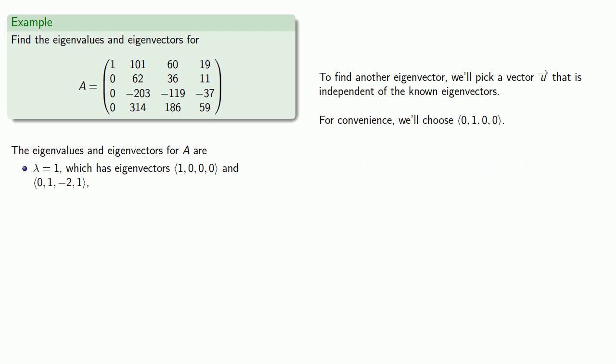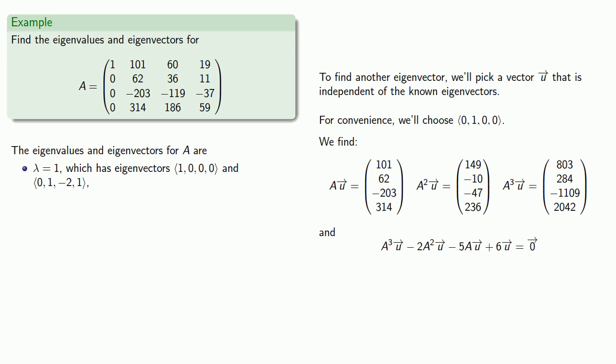So after you've satisfied yourself that this actually is independent of our two known eigenvectors, we can find Au, A squared u, and A cubed u. And we get our minimal polynomial, which we factor. And so we know the roots 1, -2, and 3 are eigenvalues.